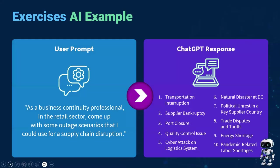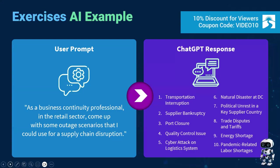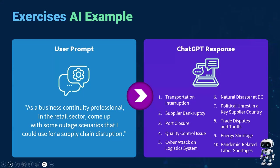Here's an example of a prompt we use in ChatGPT. The prompt was: as a business continuity professional in the retail sector, come up with some outage scenarios I could use for a supply chain disruption. It came up with the top 10 ideas, including a transportation interruption or a supplier bankruptcy. It helps to double-check the list you've come up with against this kind of top 10 recommendation list, and also fill in any gaps — maybe you didn't think about quality control issues or energy shortage. When we're doing regular exercises with clients, sometimes quarterly or annually, keeping those exercise examples fresh and relevant is really important, and AI can definitely help with that.